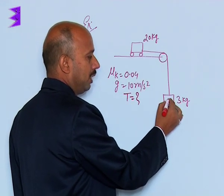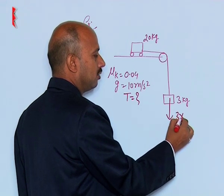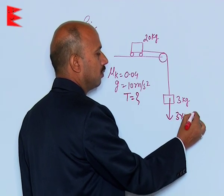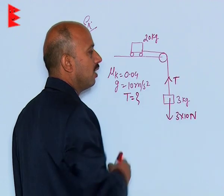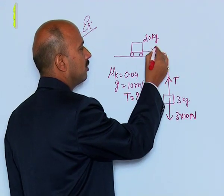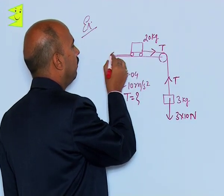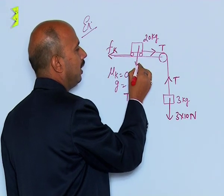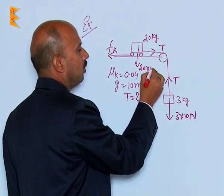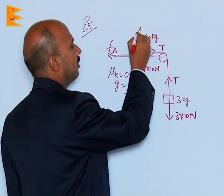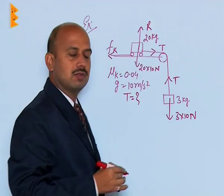For the free body diagram here, the weight is acting this side, that is 3 into 10 Newton. Tension is acting this side, string is massless, so the tension remains same and frictional force is acting to this side. Its weight is here 20 into 10 Newton to this side and reaction, normal reaction, is to this side.